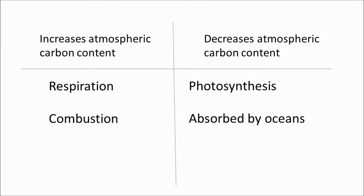Let's summarise all of this. Carbon is put into the atmosphere by the respiration of plants, animals, and decomposers, and by the combustion of fossil fuels and the burning of rainforests. Carbon is taken from the atmosphere by photosynthesis and absorption by the oceans. That was a quick run through of the carbon cycle. I hope it was of some use to you. Thank you very much for watching.